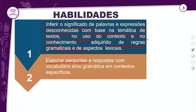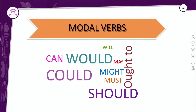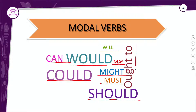A habilidade é inferir o significado de palavras e expressões desconhecidas no uso do contexto e no conhecimento adquirido de regras gramaticais e aspectos lexicais. Você vai também elaborar perguntas e respostas com vocabulário e gramática em contextos específicos. Os verbos modais que veremos hoje são: can, could, would, will, may, might, must, should e ought to.